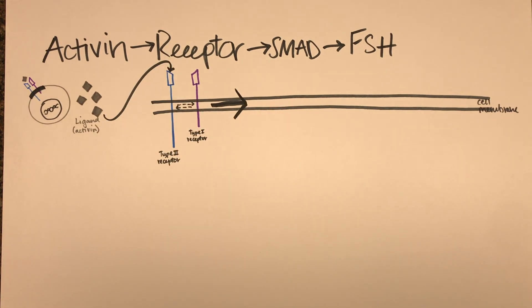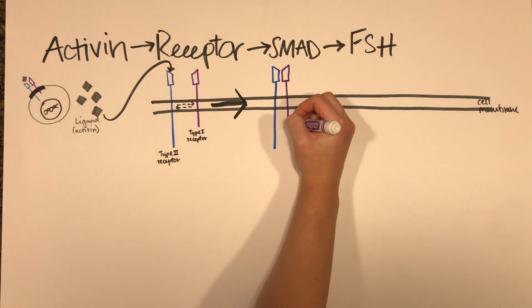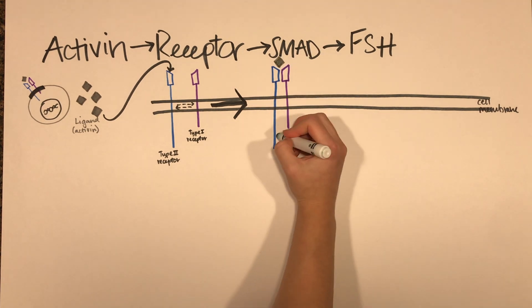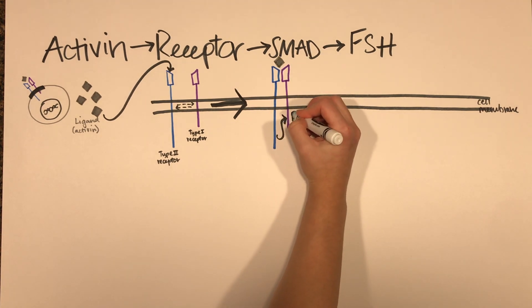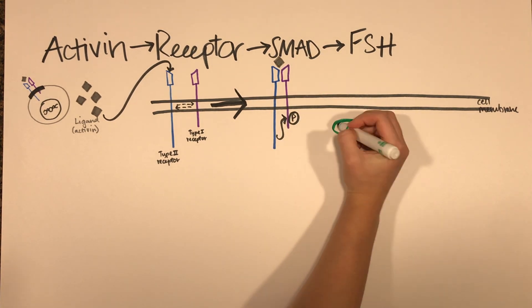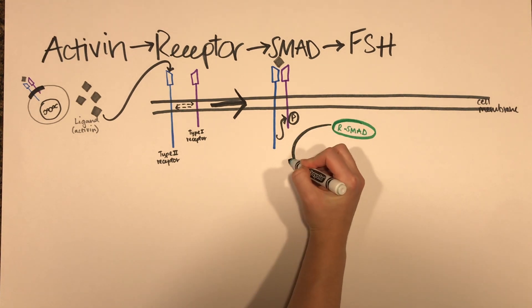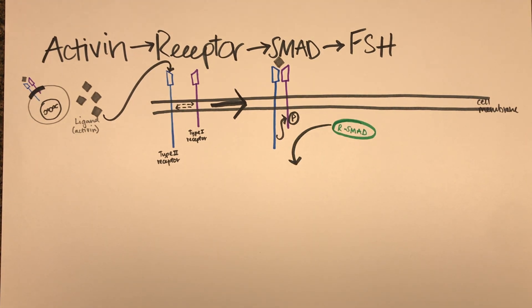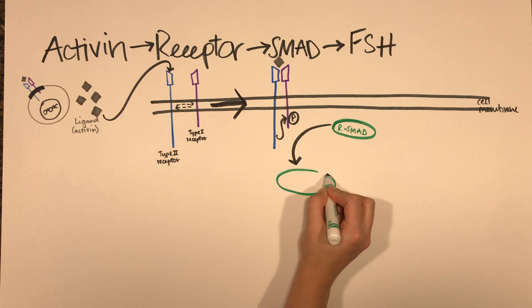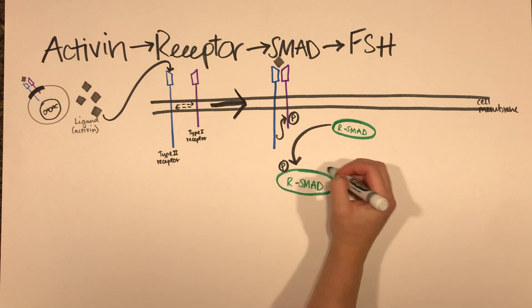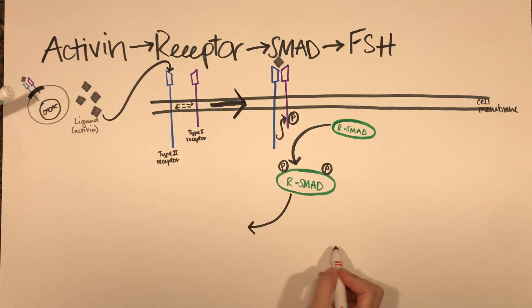Activin binding to the type 2 receptor induces recruitment of the type 1 receptor into the complex which enables the type 2 receptor to phosphorylate the type 1 receptor. The phosphorylated type 1 receptor activates the serine threonine kinase domain which phosphorylates the receptor regulated SMAD or RSMAD or SMAD2-3.